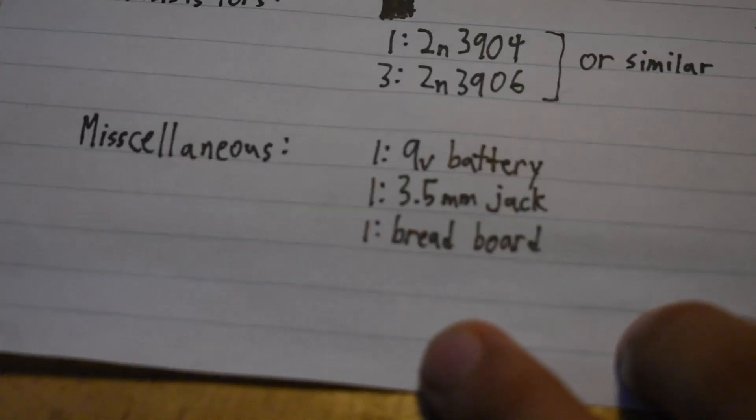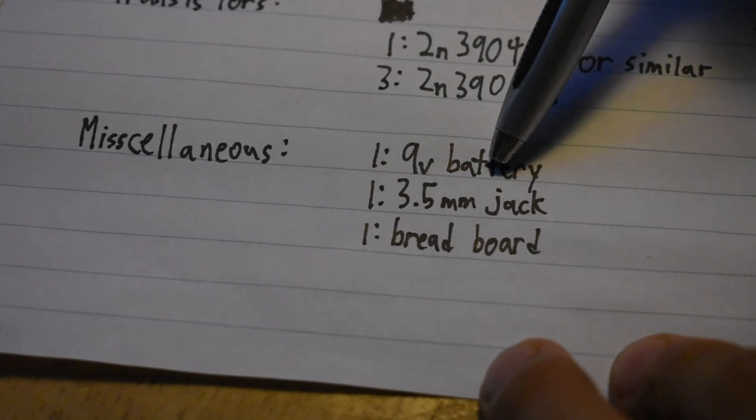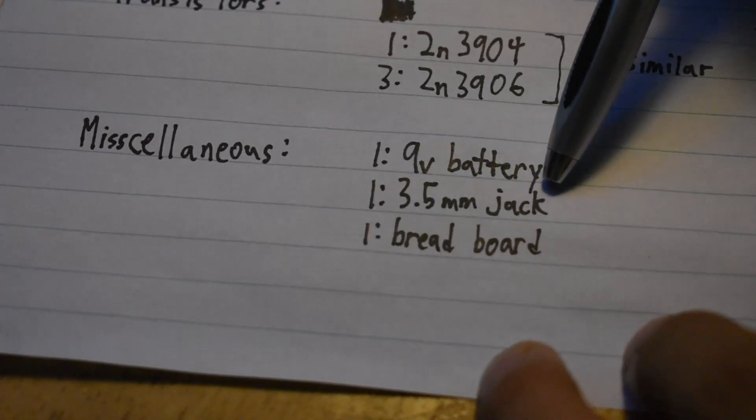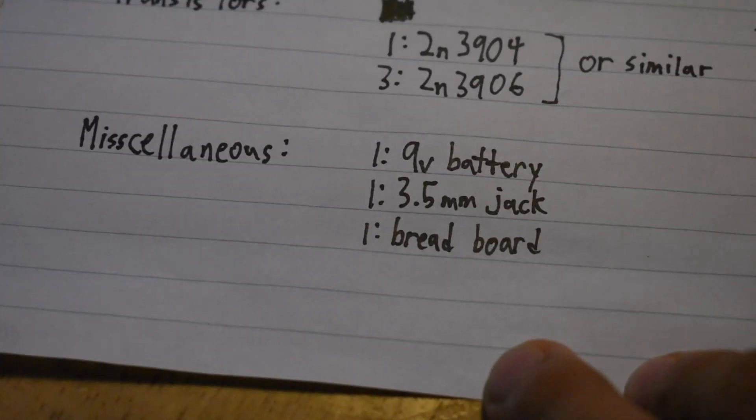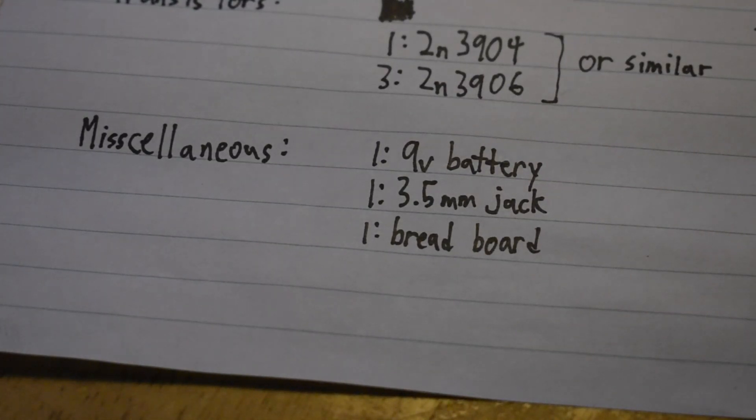And for miscellaneous, you will need the following materials. You will need one 9V battery, one 3.5mm jack, and one breadboard. These are all the materials we will need, and in the following clip, there will be a timelapse of me building the circuit.